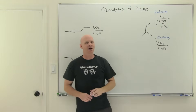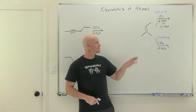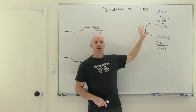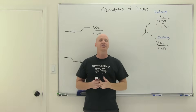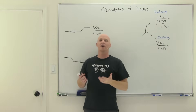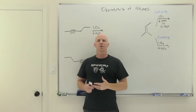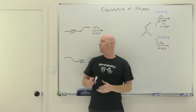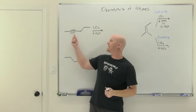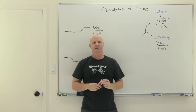Ozonolysis of alkynes is going to be the topic of this lesson. We'll start with a review of ozonolysis of alkenes, and we'll find out it's very similar. It's another sort of oxidative cleavage reaction, where instead of cleaving a carbon-carbon double bond, we're going to be cleaving a carbon-carbon triple bond instead.